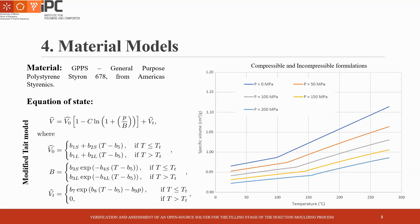To assess the effects that compressibility has in the filling stage of the injection molding process, two formulations of the modified Tait model were created. One called compressible, which is the realistic one, where the specific volume varies linearly with both temperature and pressure following a slope until the glass transition temperature or TG. After TG, the slope increases. The second formulation was created to mimic the truly incompressible formulations for polymeric materials, given by the black line, and in all calculations the value of specific volume was defined as 1.75 cm³ per gram.